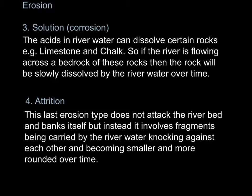The last type of erosion is attrition. It does not attack the river bed and banks itself, but instead the fragments of rock that have been broken up by the other methods knock against each other, and their particles become smaller and more rounded over time.